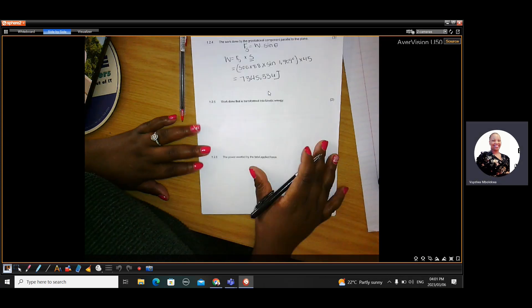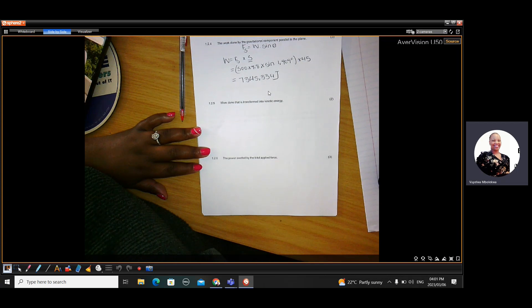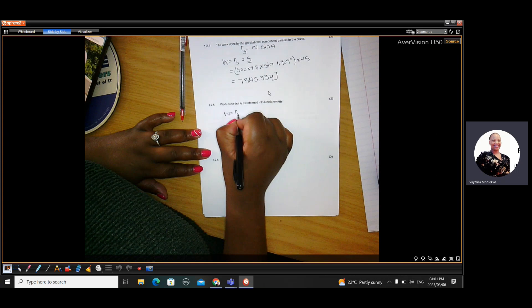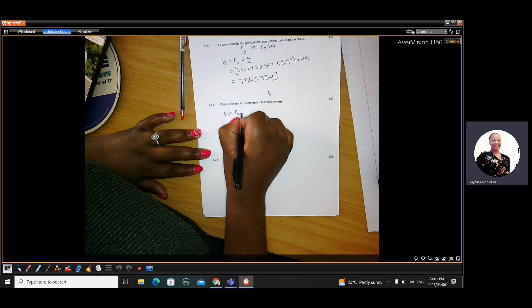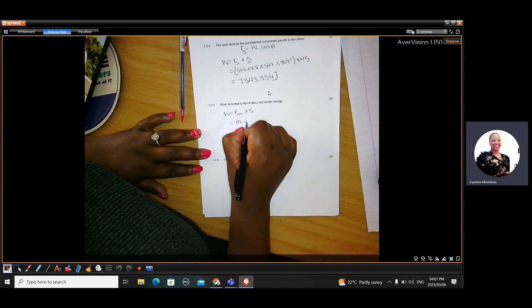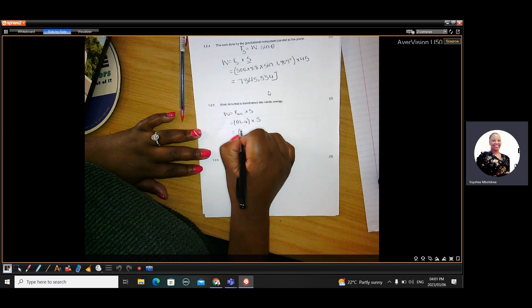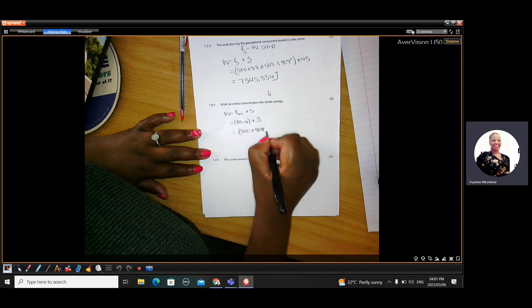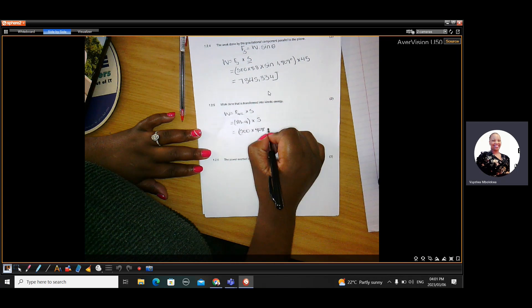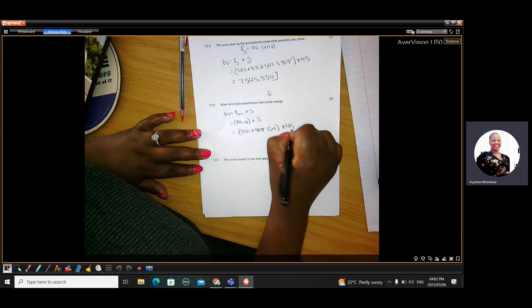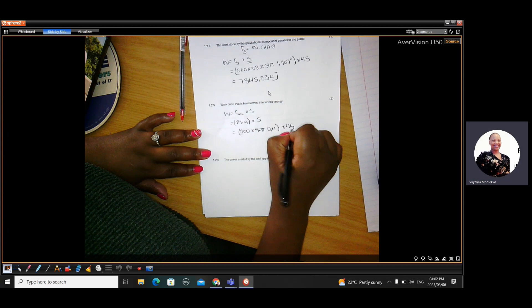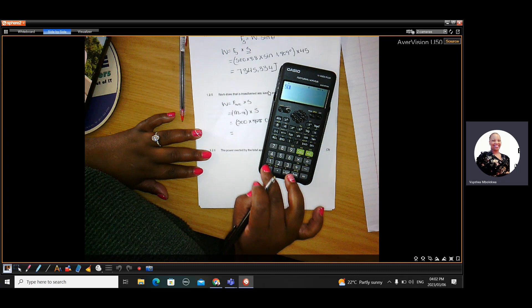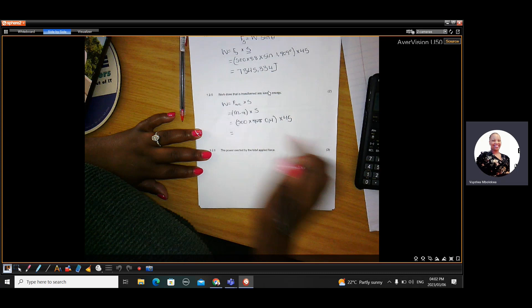Then they ask for work done that is transformed into kinetic energy. That is work done by the unbalanced force or the acceleration force multiplied by the distance. The acceleration force is mass times acceleration. That whole thing multiplied by the distance. So the mass is 500 and the acceleration is 0.4. That multiplied by 45. So that whole thing gave us 500 times 0.4 times 45 gave us 9,000 joules.